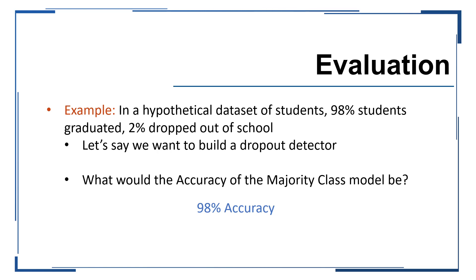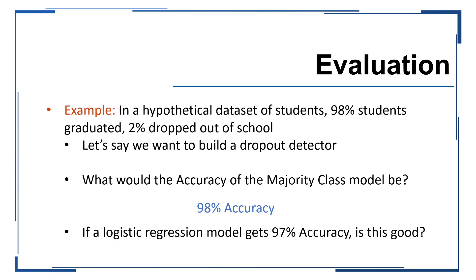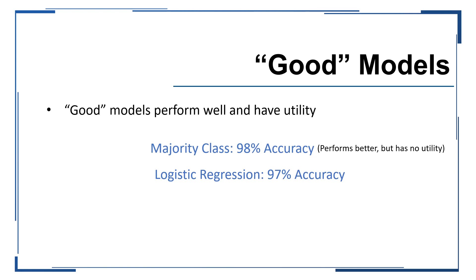Before now, if I told you that I had a model with 98% accuracy in predicting whether or not students will drop out of school, I bet a few of you would be impressed — until you realize that this model is actually completely useless. It just predicts that every student will pass regardless of any other features. If we train a model and find that it achieves 97% accuracy, is this good? By this measure alone, we might say that the majority class model outperforms the logistic regression, which is true. But we must also consider that the majority class has no utility — the logistic regression may produce some false positives, but may also still have some utility and might be able to identify some of the students who are at risk of dropping out.